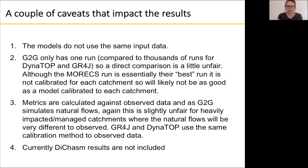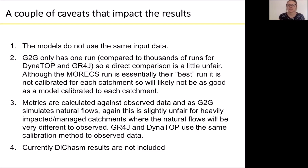We have three different models presenting results today, and Grid-to-Grid only has one run compared to thousands of runs for dynamic top model and GR4J. So a direct comparison is actually a little bit unfair on Grid-to-Grid, because they only have one simulation to test against whereas we've directly calibrated the other two models to particular output flows.